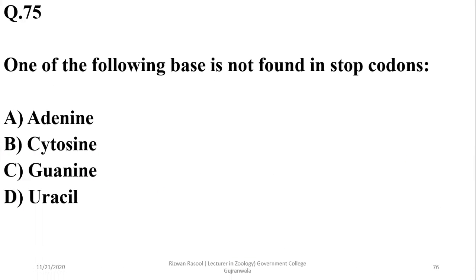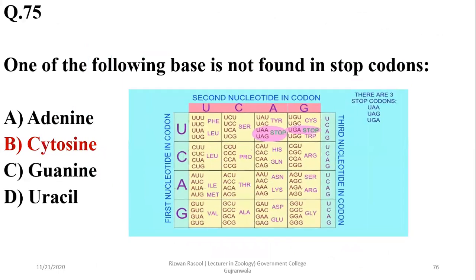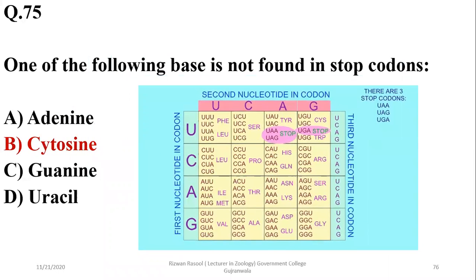Question 75: One of the following is not found in stop codons. Stop codons have adenine, guanine, and uracil, but they do not possess cytosine in any case. So the right option is B. There are three stop codons: UAA, UAG, and UGA.